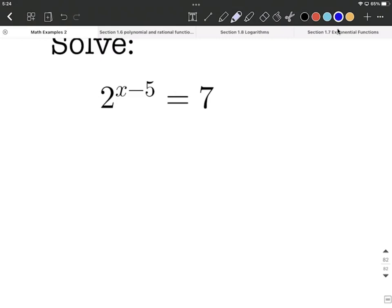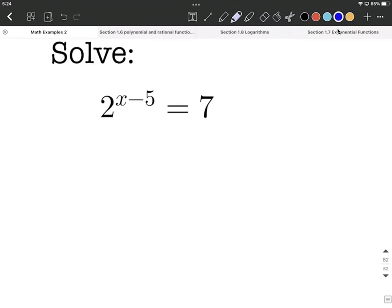Now there's no way to rewrite both sides so we have the exact same base on both sides. So I'm going to suggest that we involve a logarithmic function. I'm going to apply a logarithm to both sides, and I'm selecting the common log because that's one that we're typically allowed to use our calculators for, as opposed to say a log base 2 or a log base 7. Common log means log base 10 automatically.